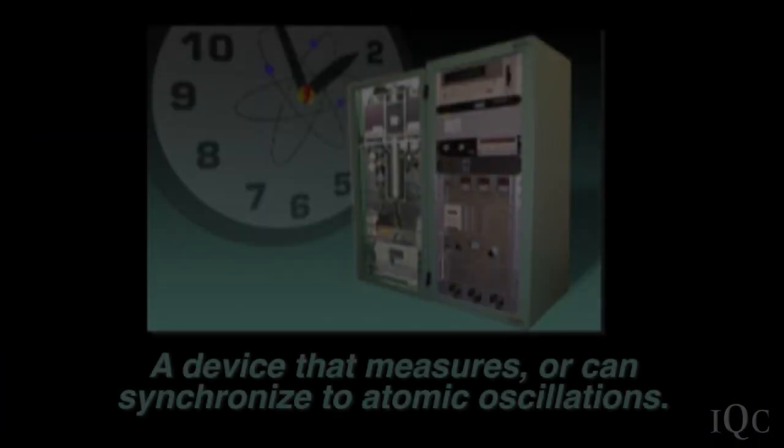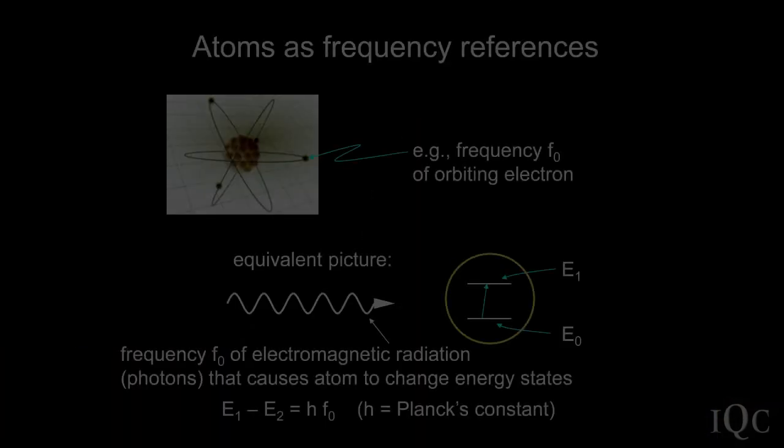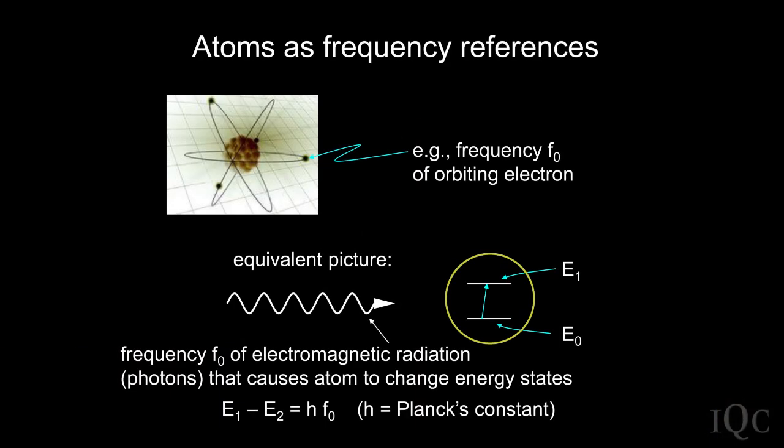For atomic clocks, it's really not much different at all. You can think about some characteristic vibration in an atom, and you build a device that somehow measures or can synchronize to those oscillations. You have an oscillator that generates radiation, and that radiation is at some particular frequency that you can tune to one of the natural oscillations in the atom.